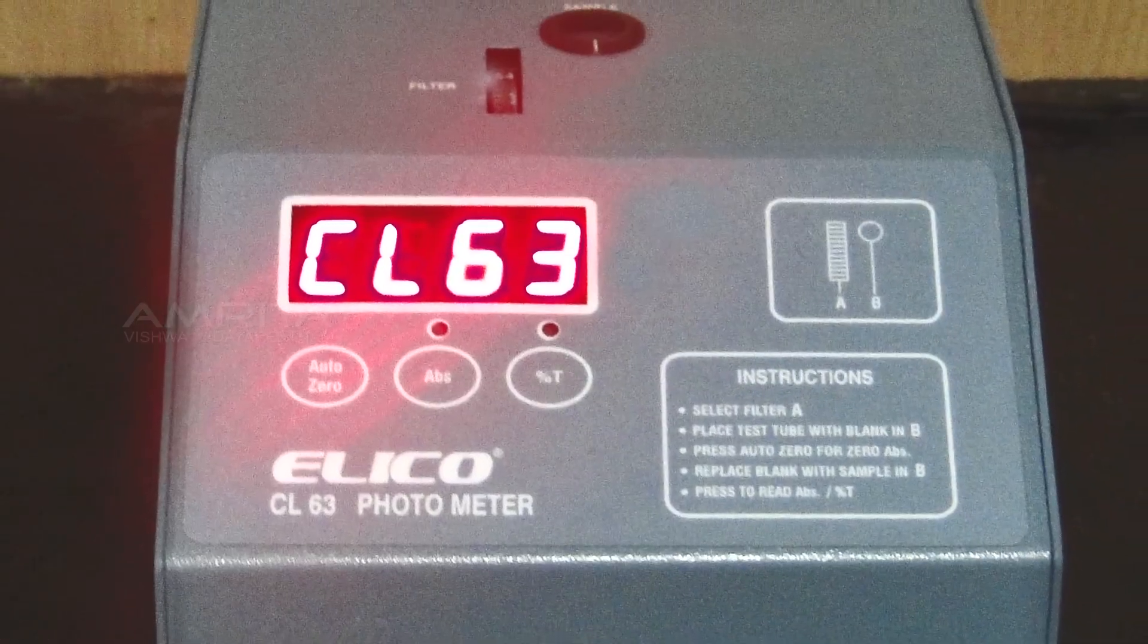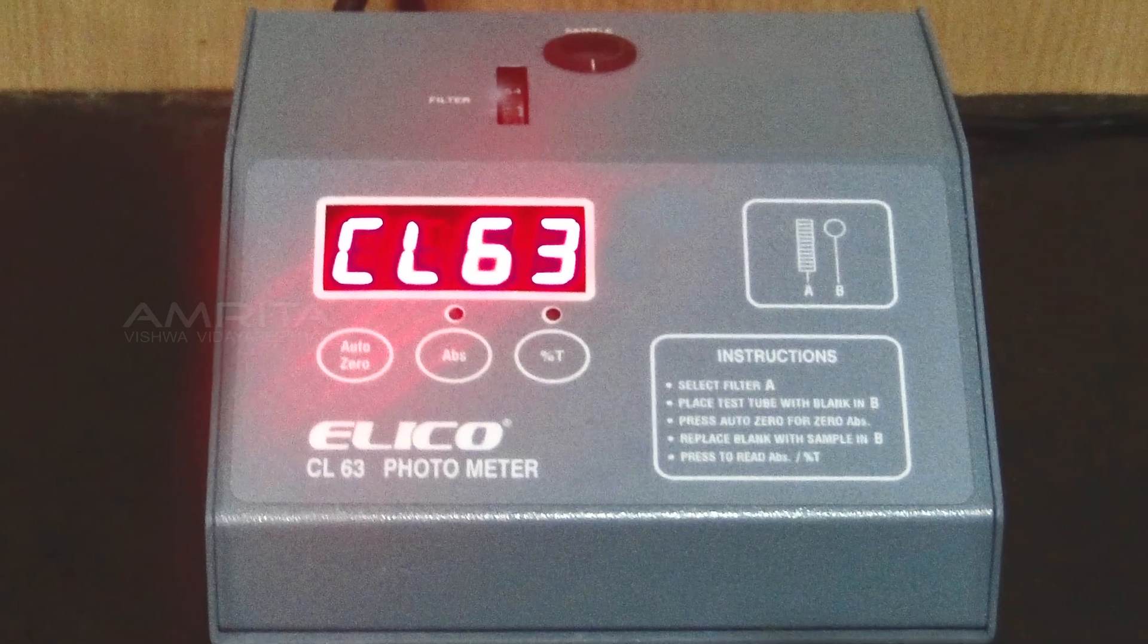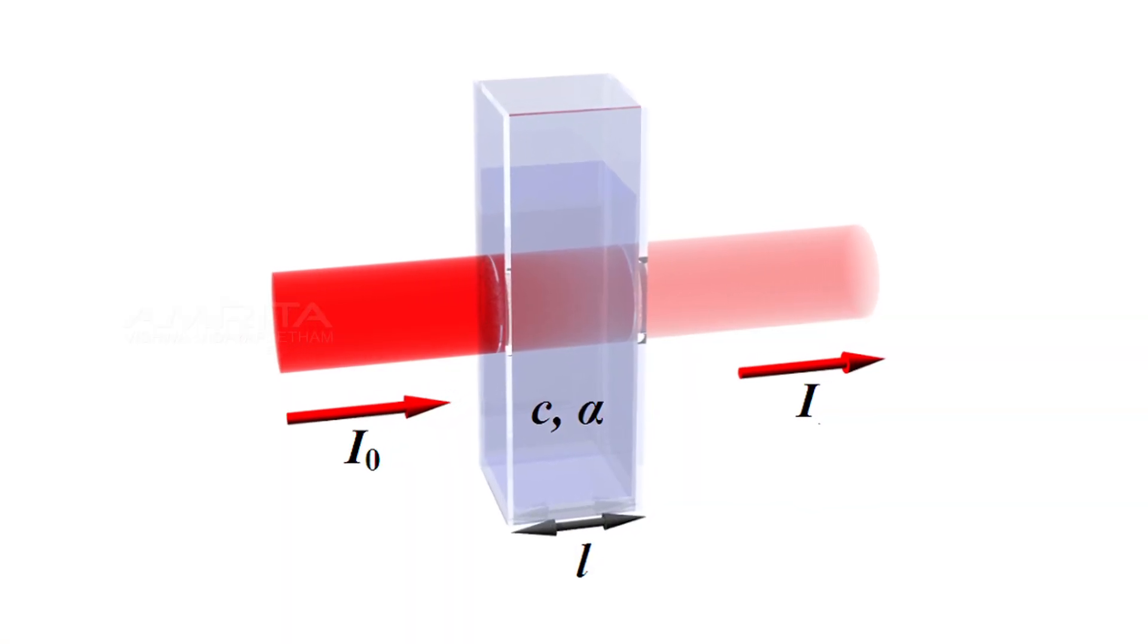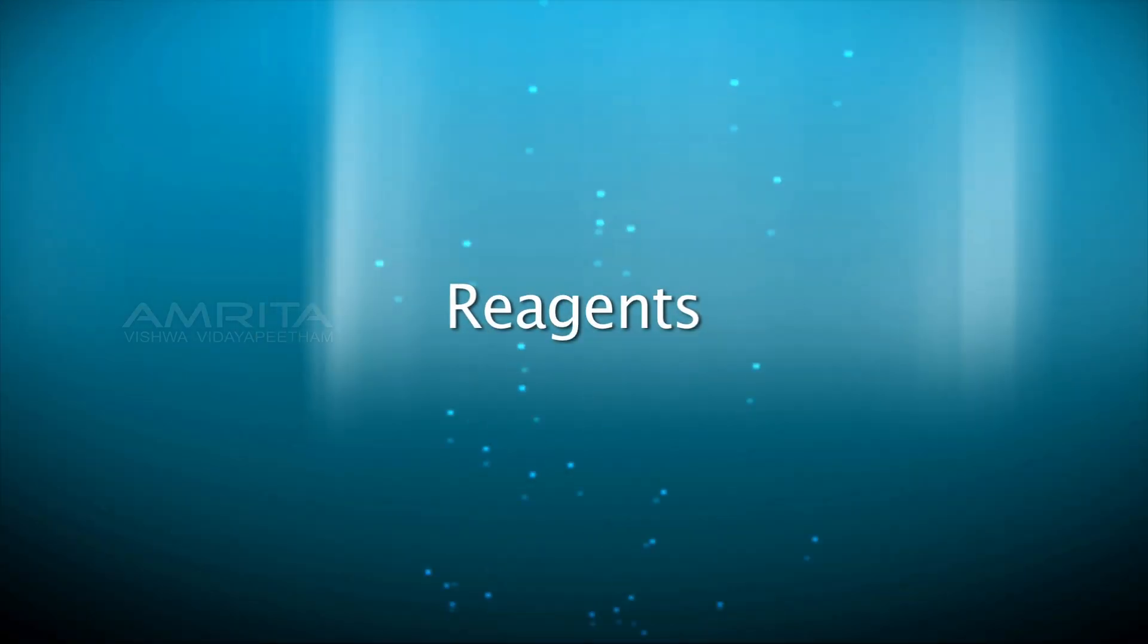A spectrophotometer or colorimeter is an instrument for measuring the absorbance of a solution by measuring the amount of light of a given wavelength that is transmitted by a sample.